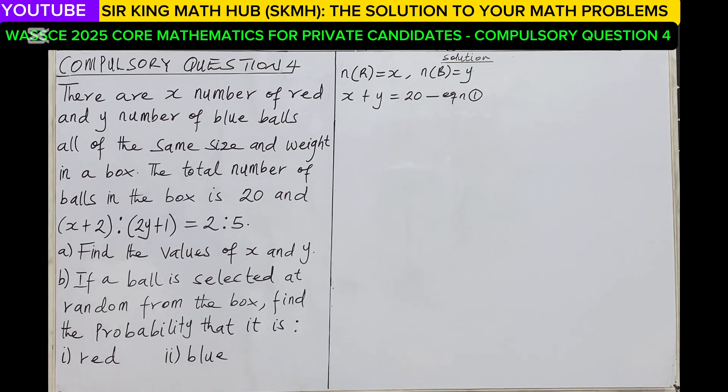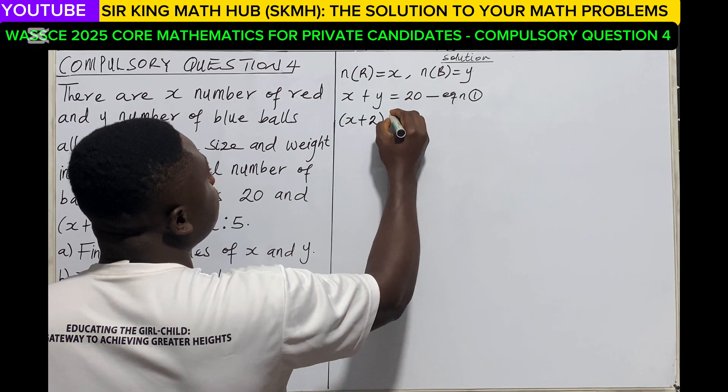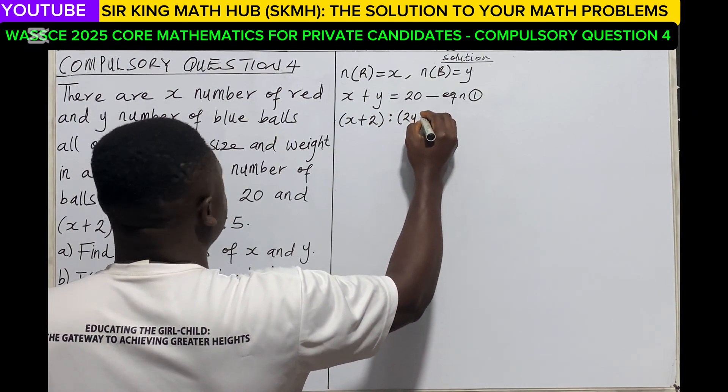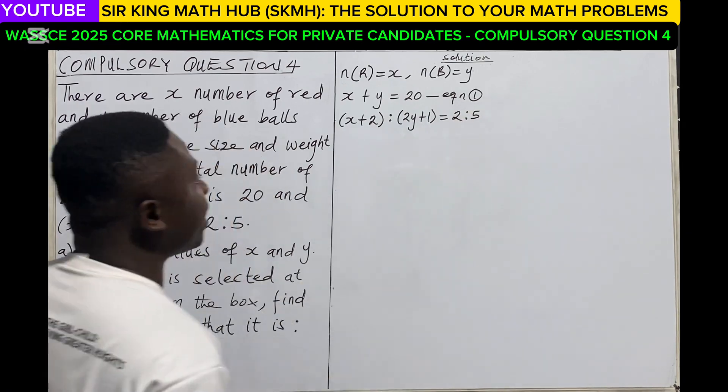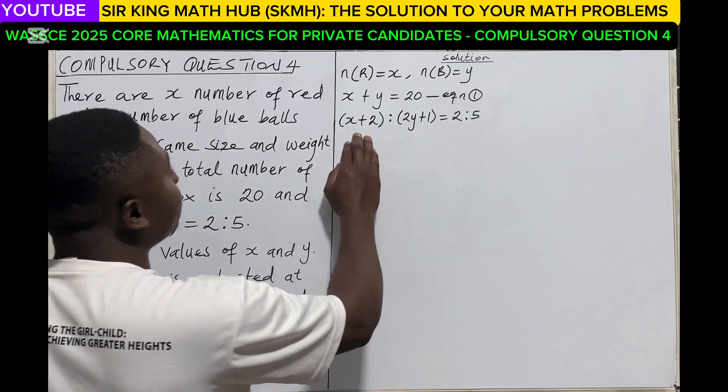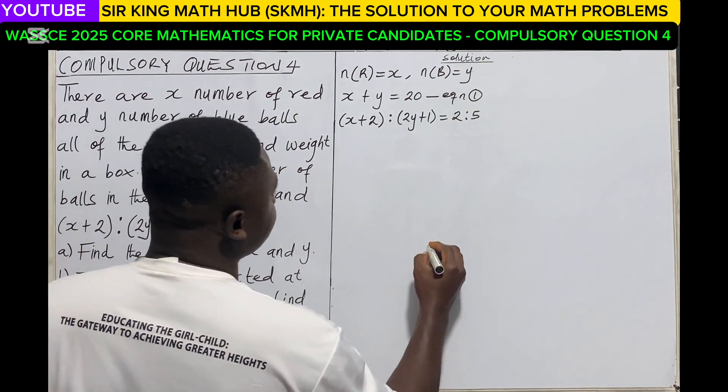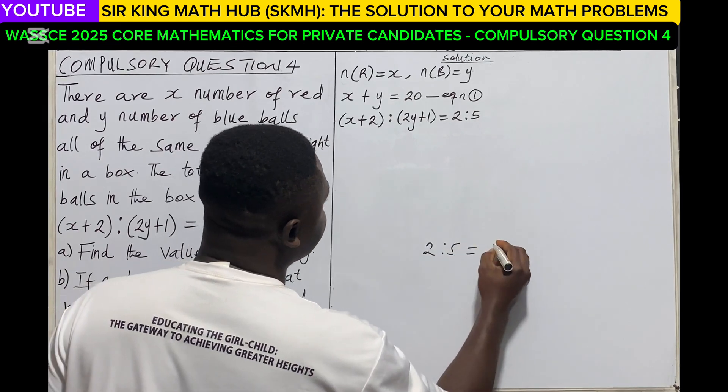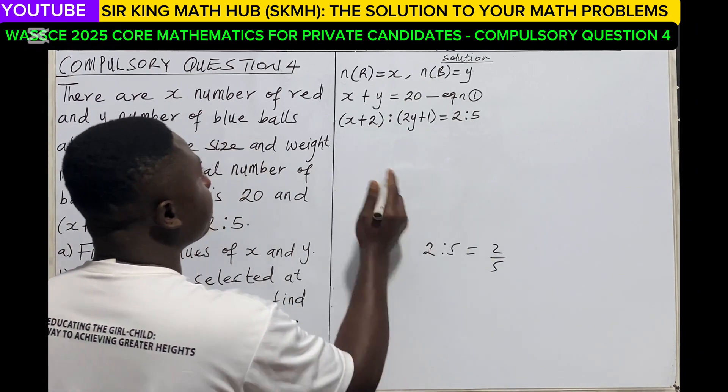And again, the ratio of (x + 2) to (2y + 1) is equal to 2 to 5. So let me write down the ratio: (x + 2) is to (2y + 1) is equal to 2 is to 5. Remember, (x + 2) to (2y + 1) can also be expressed in the form of division. So let's express the ratio in terms of division.